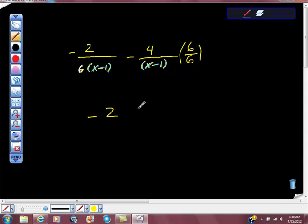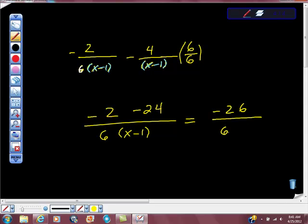This is negative 4 times 6 which is negative 24, isn't it? All over 6 times x minus 1 equals negative 26. I'm sorry - negative 26 over 6 times the quantity x minus 1.